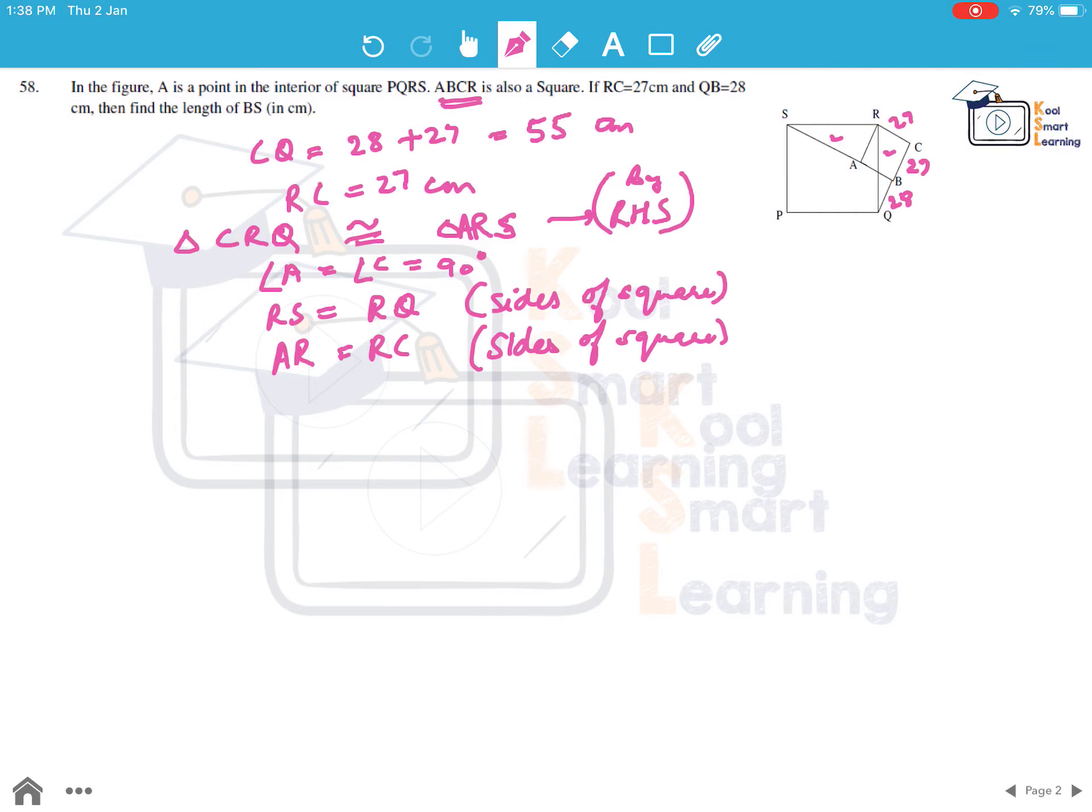Which would imply that AS is equal to QC and AS is nothing but QC we know is 55 cm. So AS is 55 cm.